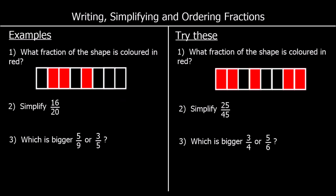Writing, simplifying and ordering fractions. The first question says: what fraction of the shape is coloured in red? So how many parts are red out of how many in total? We've got 3 red out of 8 in total. So if 3 out of 8 are coloured in red, then we call that 3 eighths. 3 eighths of the shape are red.